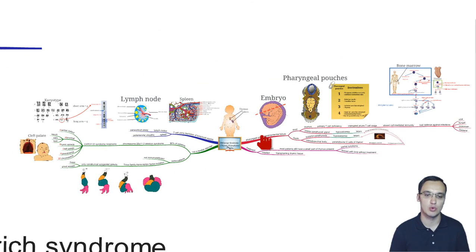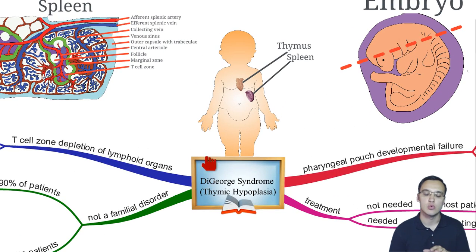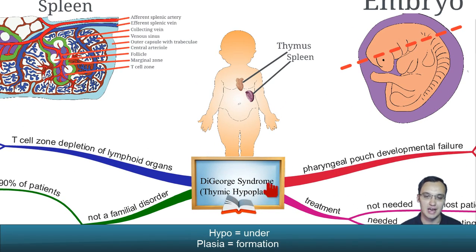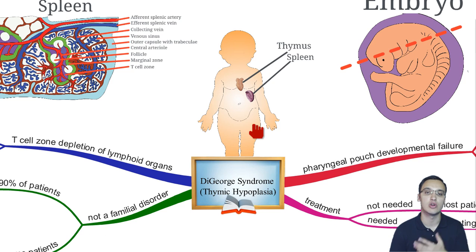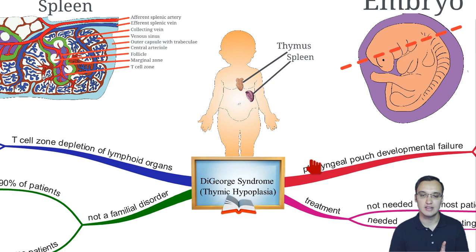This is everything you have to know about DiGeorge syndrome. We have a couple of pictures and some branches. Let's turn to the baby, which has thymic hypoplasia. The thymus is usually there for having T cells mature into normal, competent T cells which can defend you against infections. In this baby, this will not be functioning well because the baby has a pharyngeal pouch developmental failure.